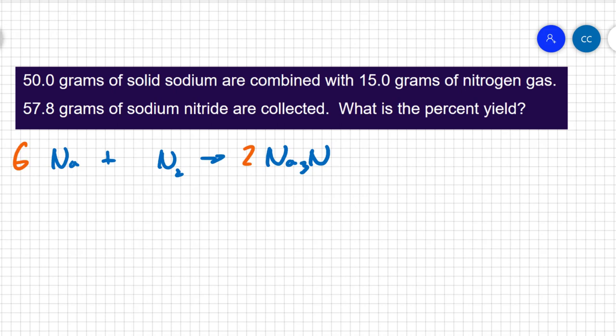Now that we have the balanced equation, let's figure out what we're trying to find. They tell us that 57.8 grams of sodium nitride are collected. If you notice the active verb there, that means that somebody actually went and performed the experiment and collected that 57.8 grams, which means that number is an actual yield. What we need to figure out is a theoretical yield in order to calculate a percent yield. So we have to do some stoichiometry. We need to figure out how much sodium nitride will be produced.